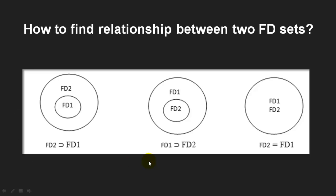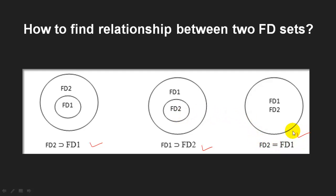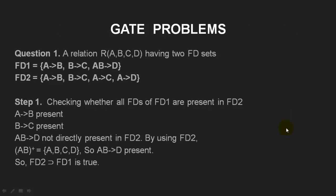To represent this, we can use a Venn diagram. If FD2 is a superset of FD1, FD1 will be inside and FD2 will be outside. If FD1 is a superset of FD2, FD1 will be outside and FD2 will be inside. If FD1 and FD2 are equivalent, they can be represented using the same circle. To understand this, we will solve some GATE problems based on this concept.